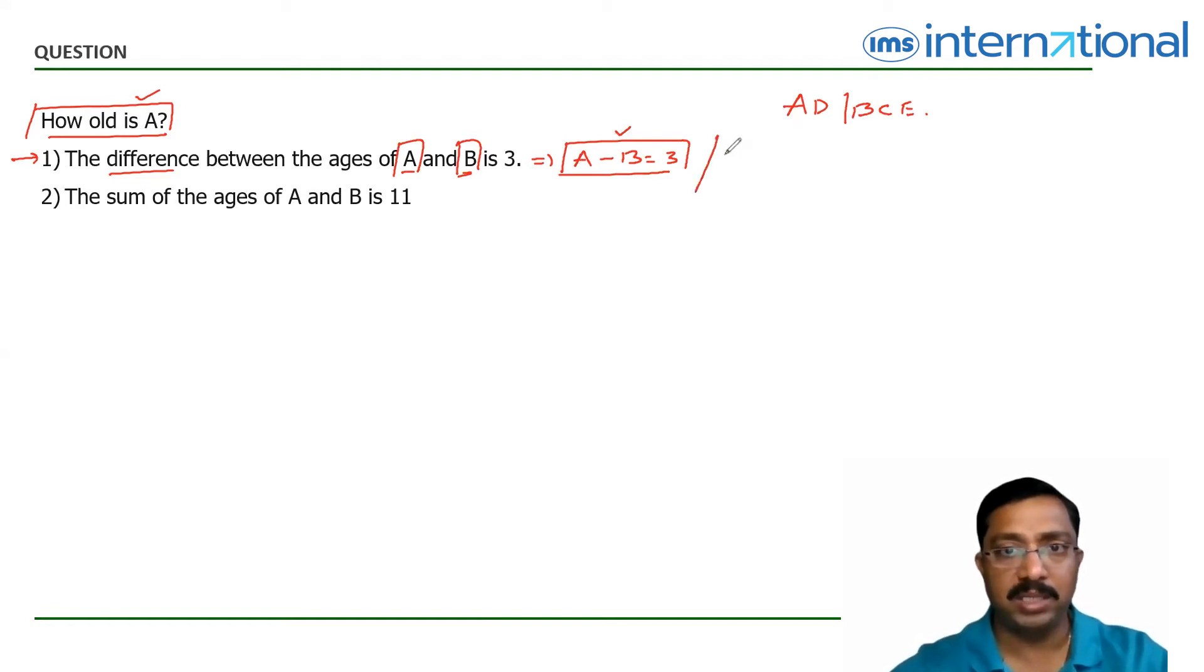So you can't be limiting yourself framing up an equation as A minus B equal to three here. This can also be B minus A equal to three. Don't you think so? Because it's not given who among these two, A and B, is elder. If A is elder than B, then A minus B is three. If B is elder to A, then B minus A is equal to three. So because it's just given that the difference between the two people ages is three.